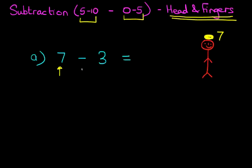Now have a look at the sign. Back to the question — it is minus. That means we're going to take away. How much are we going to take away? We're going to take away 3. So we're going to hold out 3 fingers: 1, 2, 3. Imagine those as the fingers you're holding out. So when you read the question, you're going to say there is 7 on my head and 3 in my hand. Hold out 3 fingers.